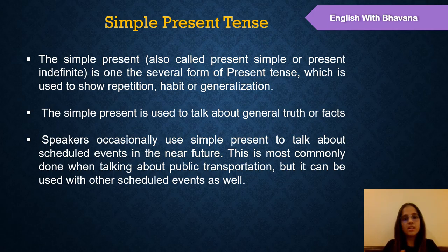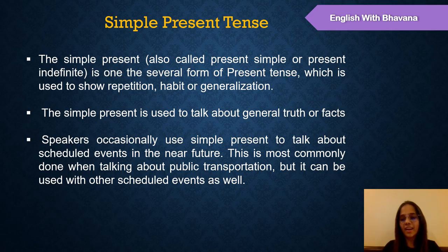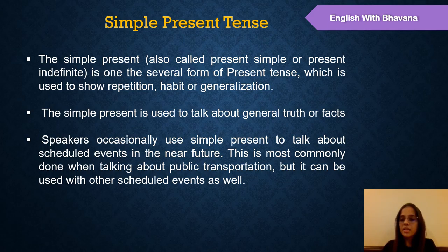Simple present tense is also used to talk about general truth — facts that cannot change. For example, 'The sun rises in the east.' You cannot change it; the sun will not rise from the west. So it is general truth. Another example: 'Honey is sweet.' Honey will always be sweet; it will never become bitter. So it is general truth, and we use simple present tense for it.